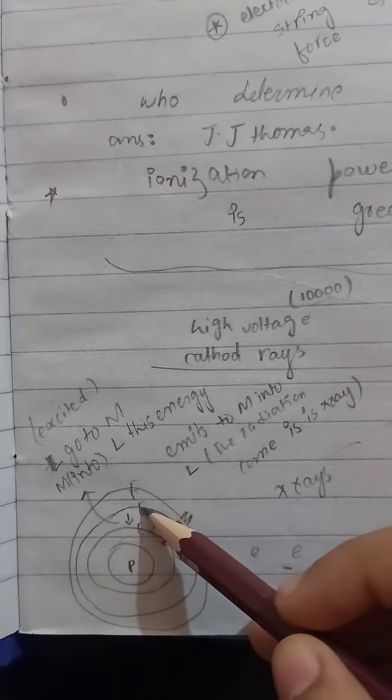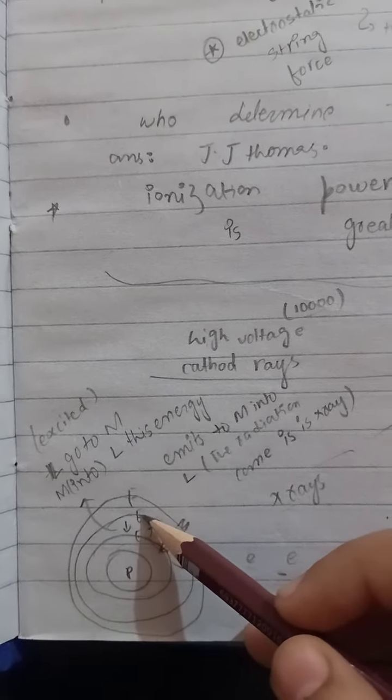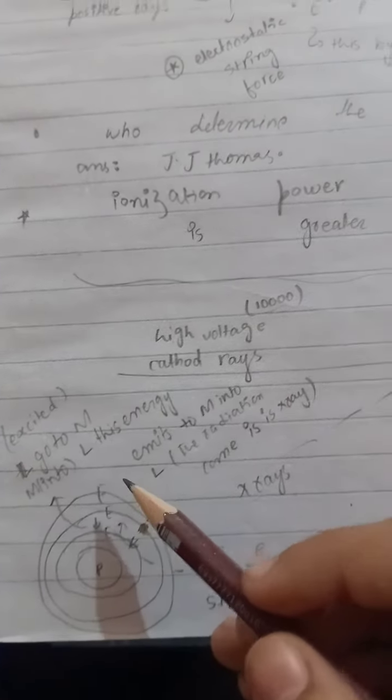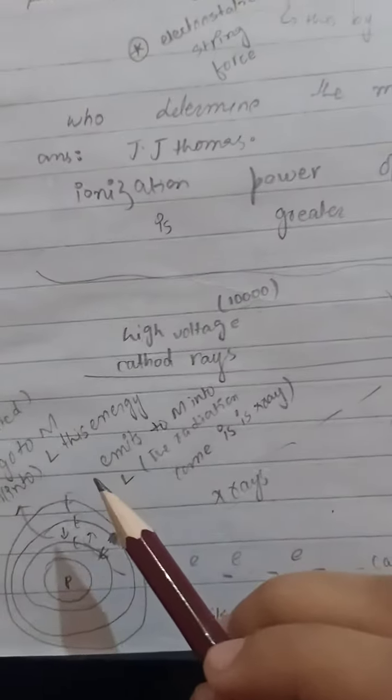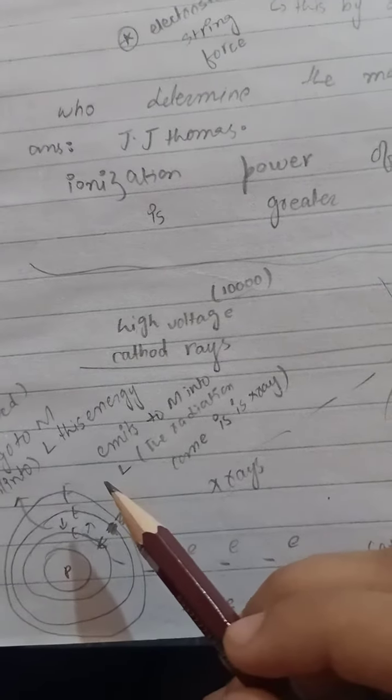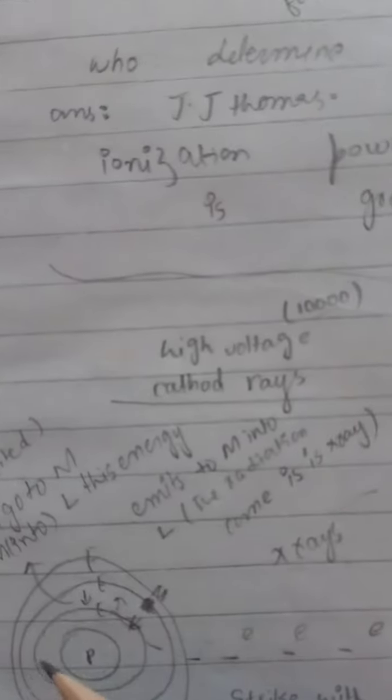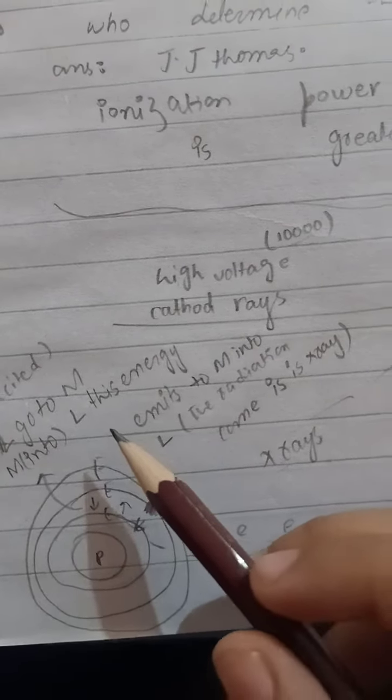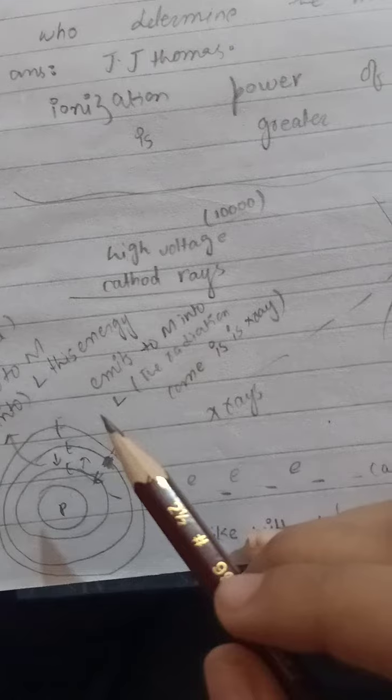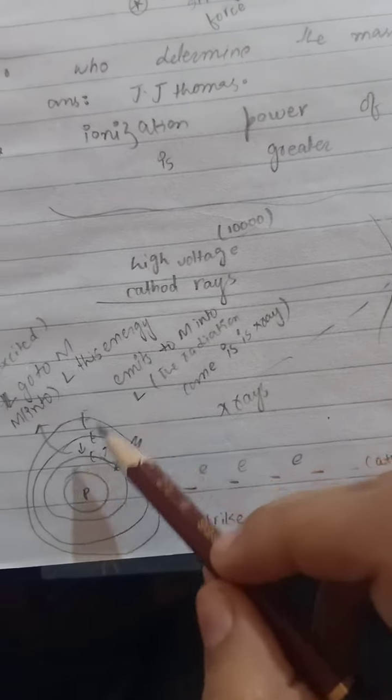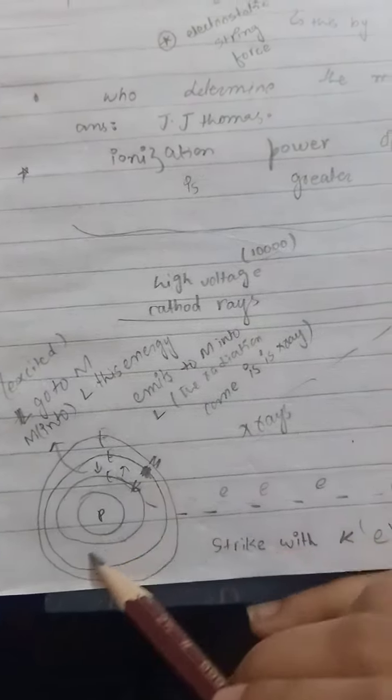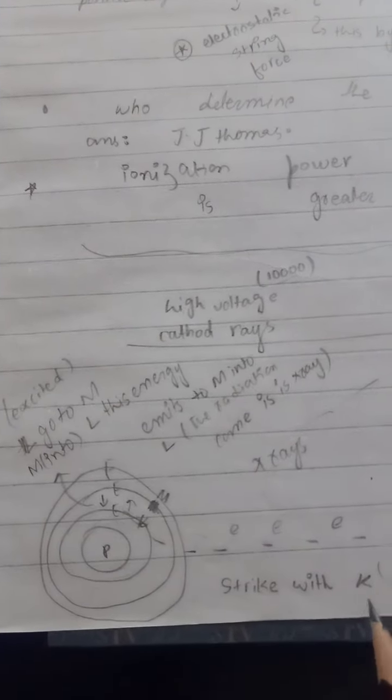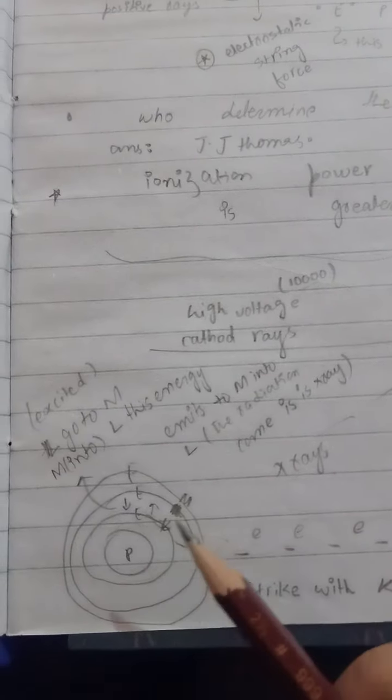From the L shell it will be coming downward. So the radiation or the production of X-rays will be counted if the electron is moving upper side and this high potential electron is moving downward side. The X-rays will be produced by these electrons when electrons strike the K shell and move upward.